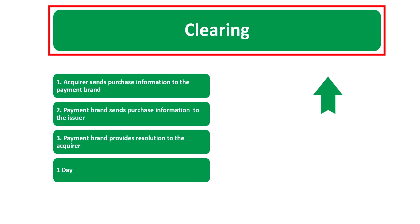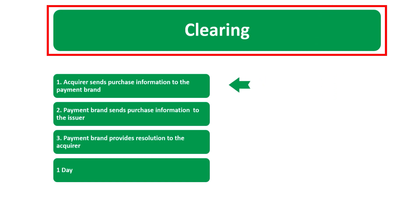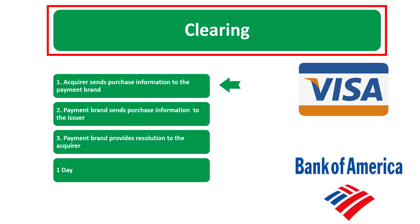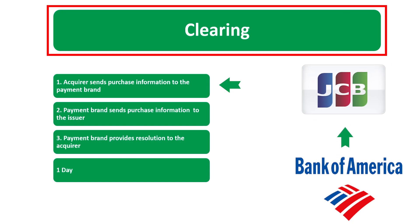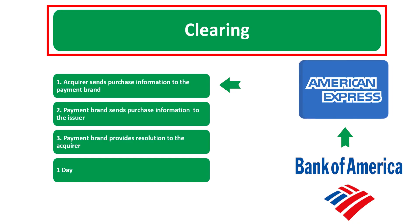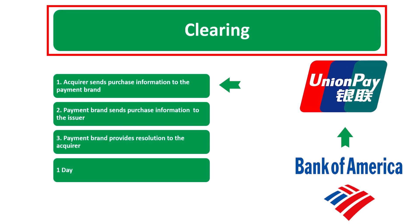Our next step is the clearing process — very easy and short. First, the acquirer — the bank of the merchant — sends purchase information to the payment brand: Visa, Mastercard, Discover, JCB, American Express, or UnionPay. Then the payment brand sends that purchase information to the issuer.